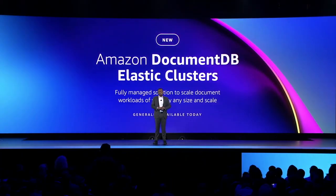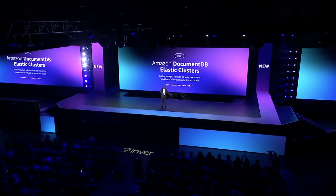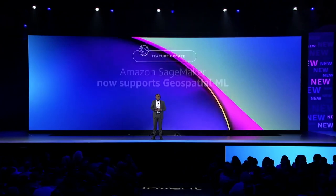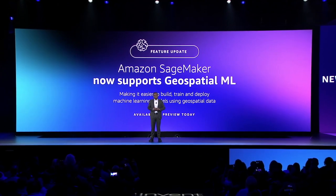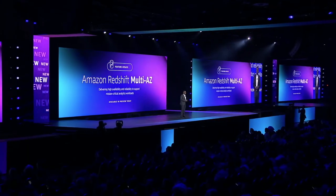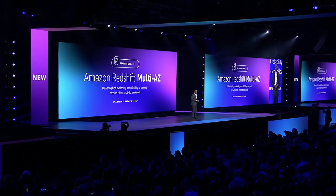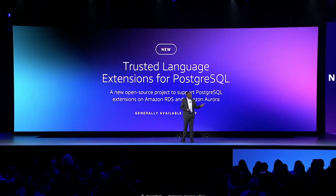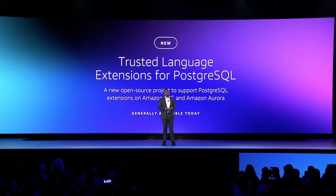I'm pleased to announce the general availability of Amazon DocumentDB Elastic Clusters, a fully managed solution for document workloads of virtually any size and scale. I'm also excited to announce that Amazon SageMaker now supports new geospatial ML capabilities. I'm honored to introduce Amazon Redshift Multi-AZ, a new configuration that delivers the highest levels of reliability. And I'm excited to announce trusted language extensions for Postgres, a new open-source project that allows developers to securely leverage Postgres extensions on RDS and Aurora.